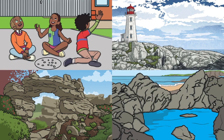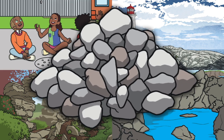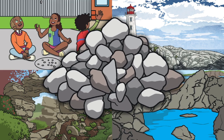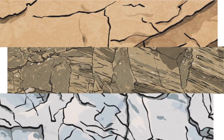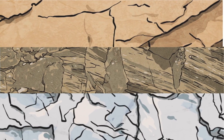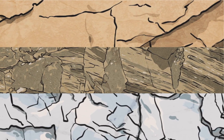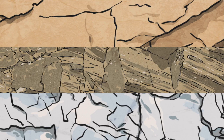Rocks are everywhere. The ground you walk on, the mountains you see, and even some buildings are made of rock. But did you know there are three main types of rocks? Each one forms in a different way.